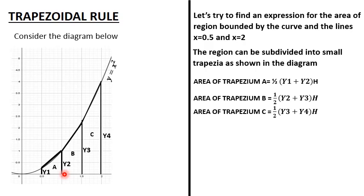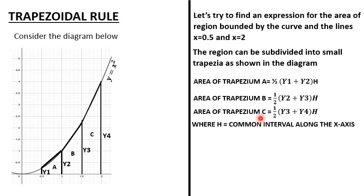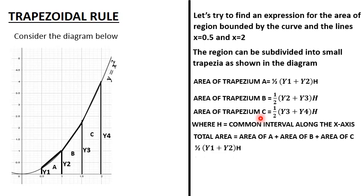The area of trapezium C is also given as ½(y₃ + y₄)h. So the total area bounded by this curve and the two given lines equals area of A plus area of B plus area of C. Here h represents the common interval along the x-axis — the common distance between two parallel lines, which in this case is 0.5, but we denote it as h.